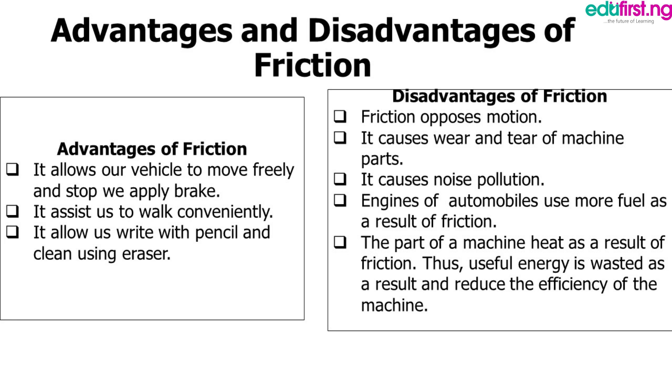Disadvantages of friction. One, friction opposes motion. Two, it causes wear and tear of machine parts. Three, it causes noise pollution. Four, engines of automobiles use more fuel as a result of friction. Five, the parts of a machine heat as a result of friction. Thus, useful energy is wasted as a result and reduces the efficiency of the machine.